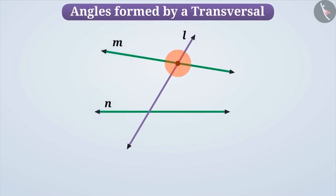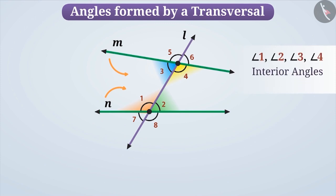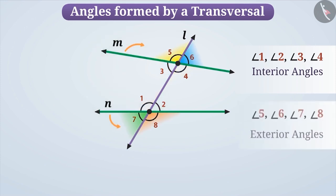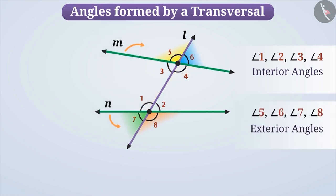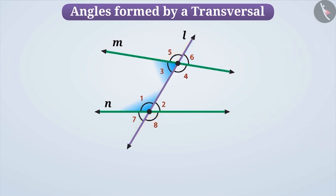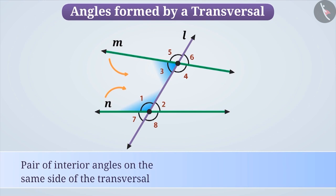When a transversal intersects two lines, a total of eight angles are formed. The angles which are interior to the two lines are called interior angles, and the angles which are exterior to the two lines are called exterior angles. The pair of two angles which are in the middle of the two lines and on one side of the transversal are called the pair of interior angles on the same side of the transversal.